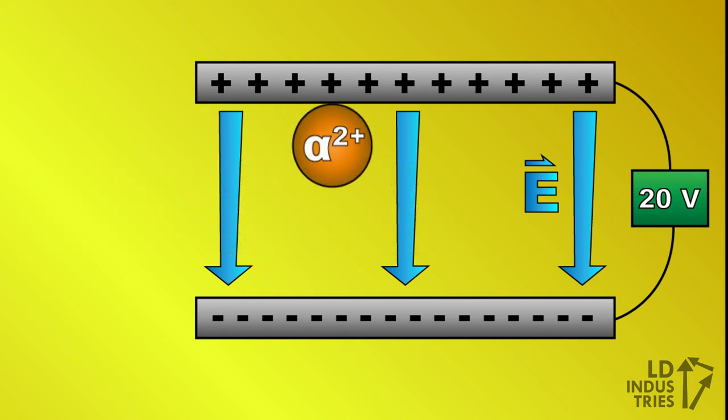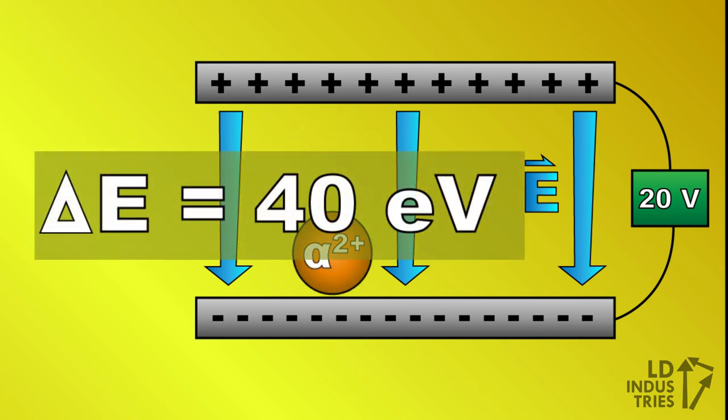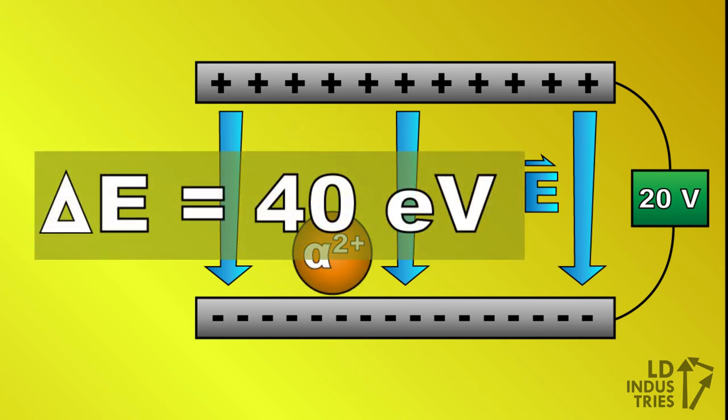If we use a particle with double the elementary charge, like this alpha particle, it will gain double the amount of energy, so a total of 40 electron volts when moving through the electric field created by a power source of 20 volts.